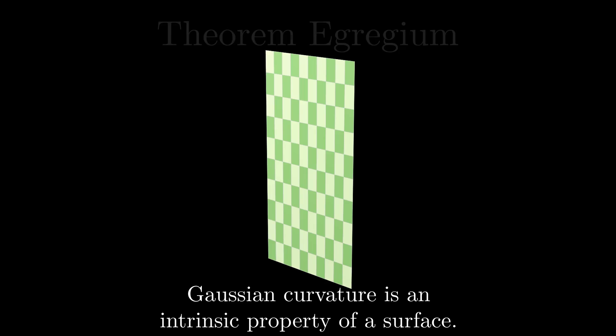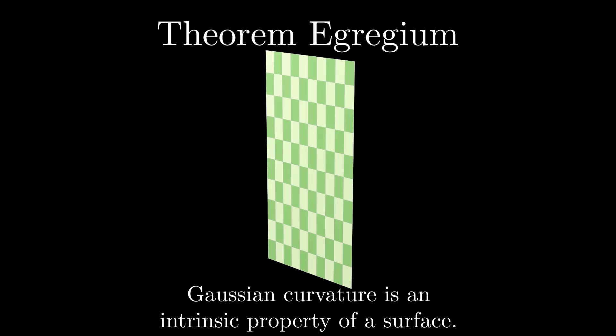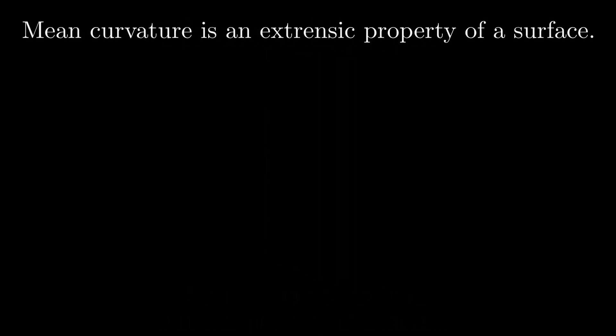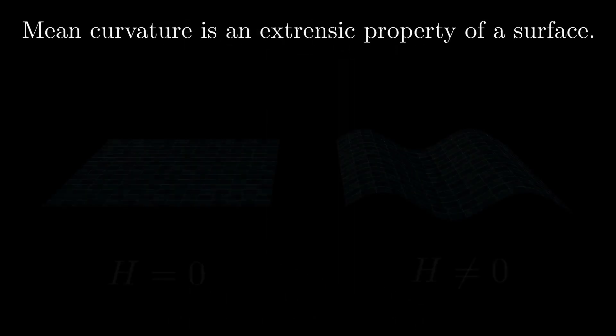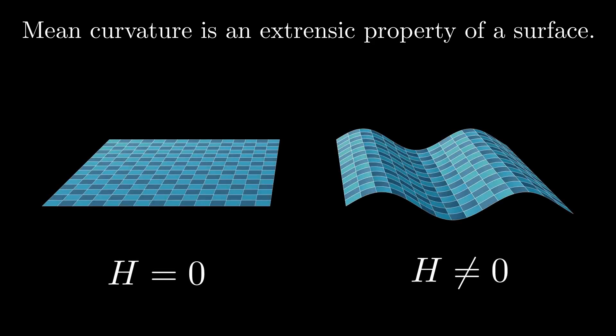That the Gaussian curvature is an intrinsic property means that it can be calculated by only measuring angles and distances on the surface. This fundamental result, known as the Theorema Egregium — Latin for Remarkable Theorem — was proven by Gauss. By contrast, mean curvature is an extrinsic property; it depends on how the surface is embedded in space. For example, a flat surface has mean curvature 0 everywhere, while a bent surface does not have everywhere 0 mean curvature. So the mean curvature is different, although the surfaces look intrinsically the same.